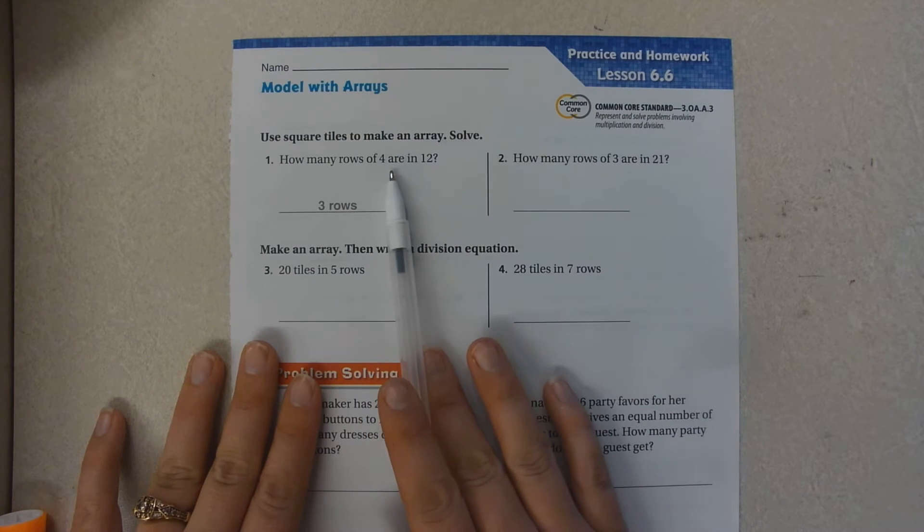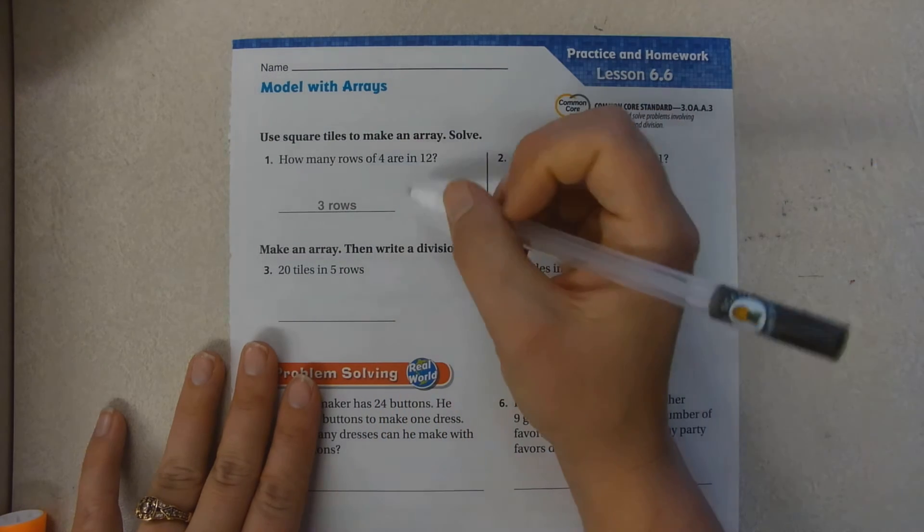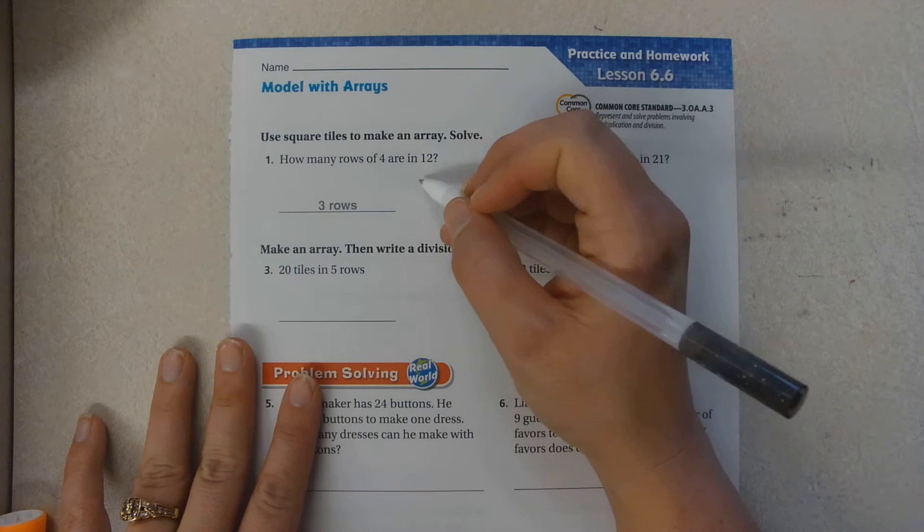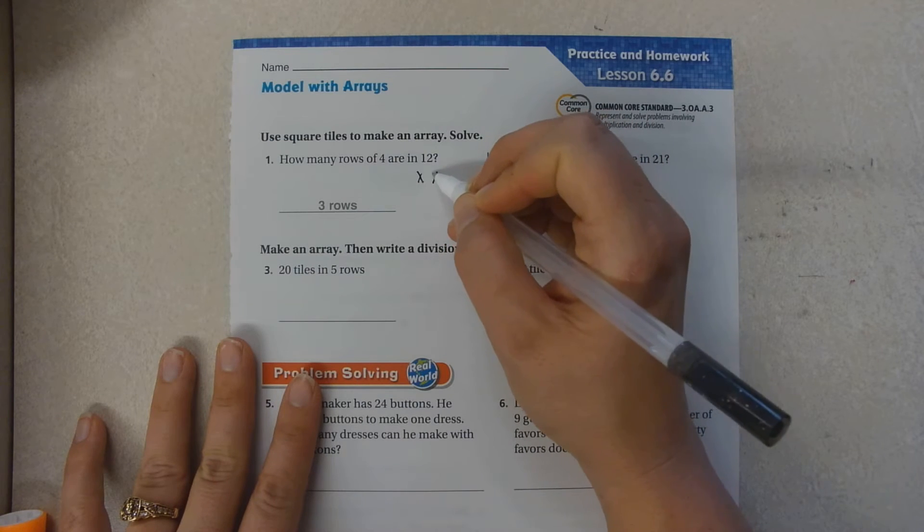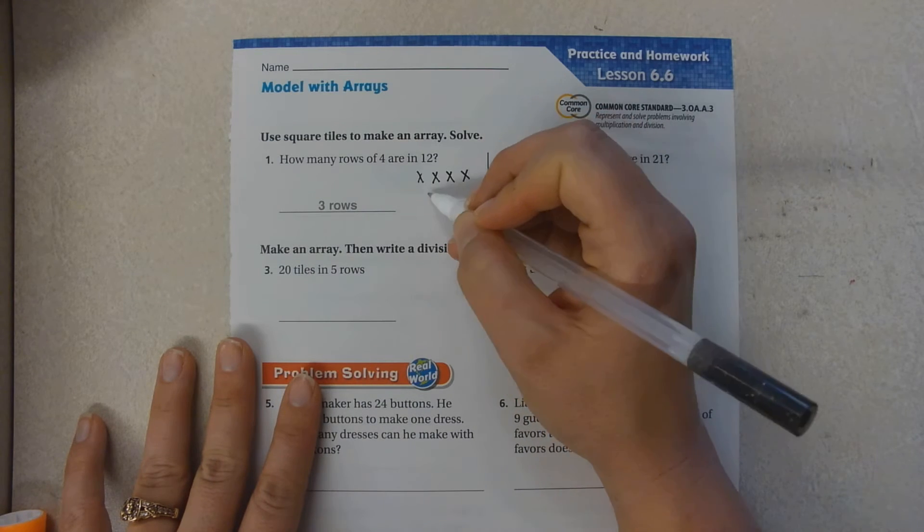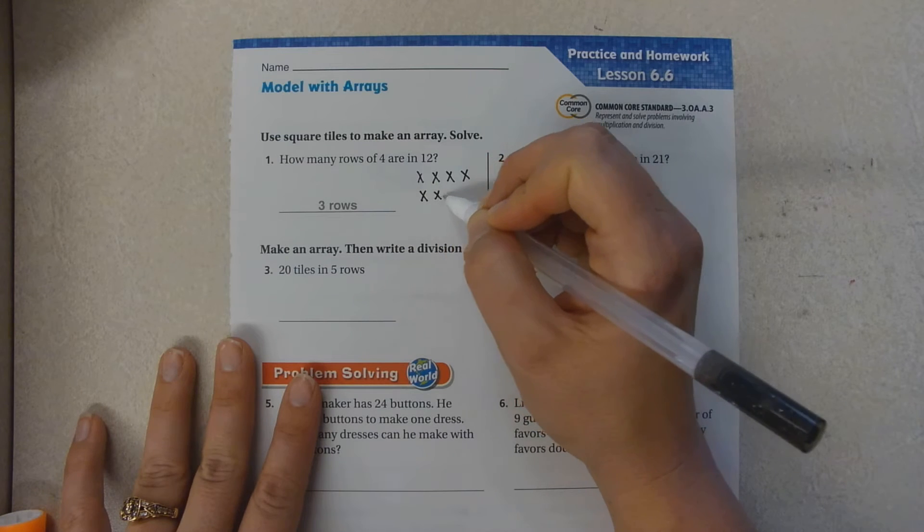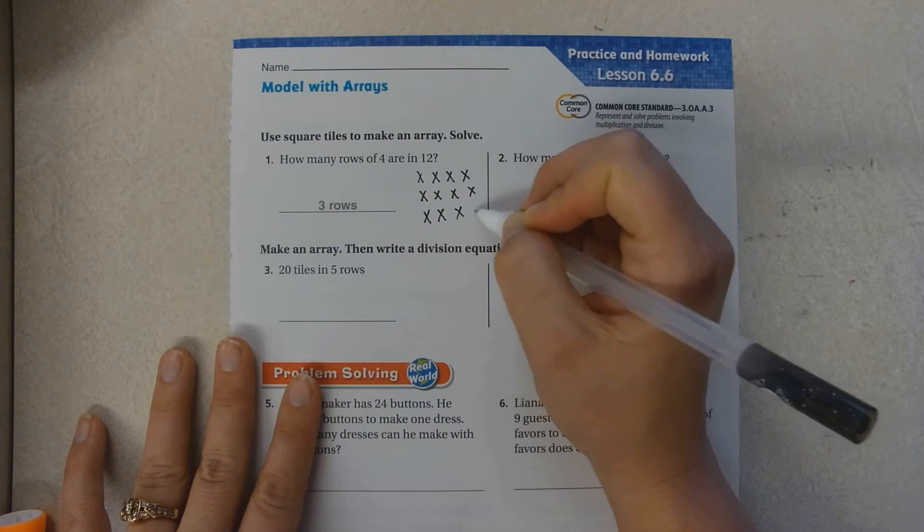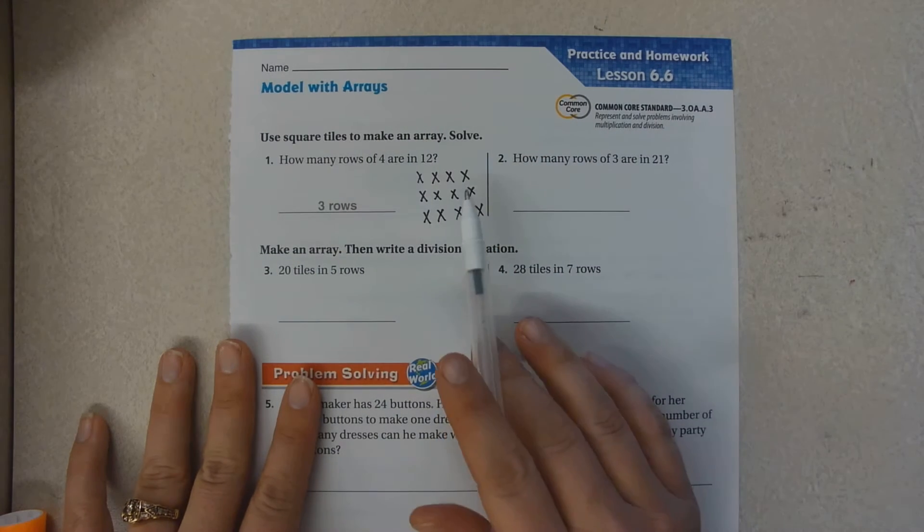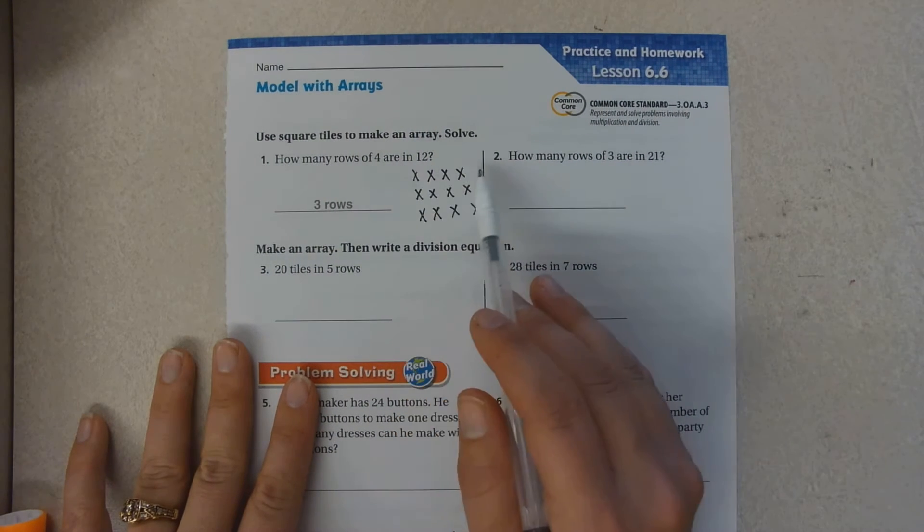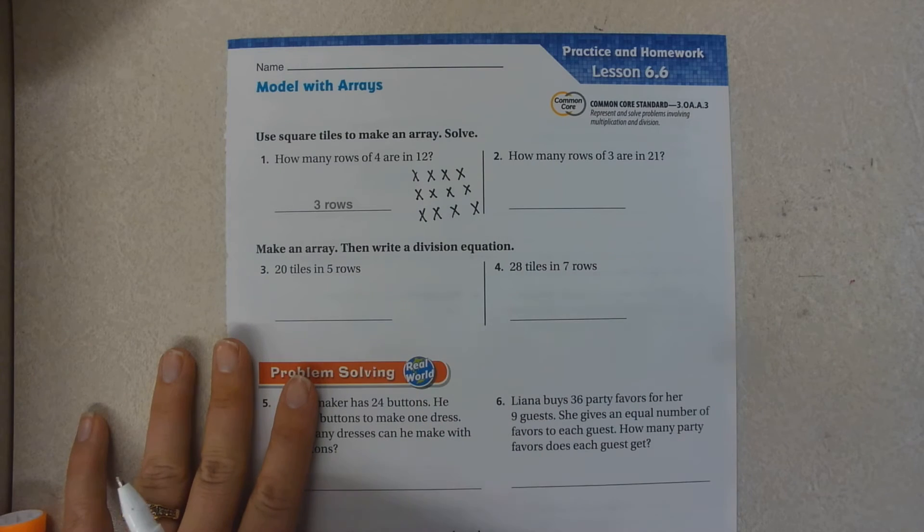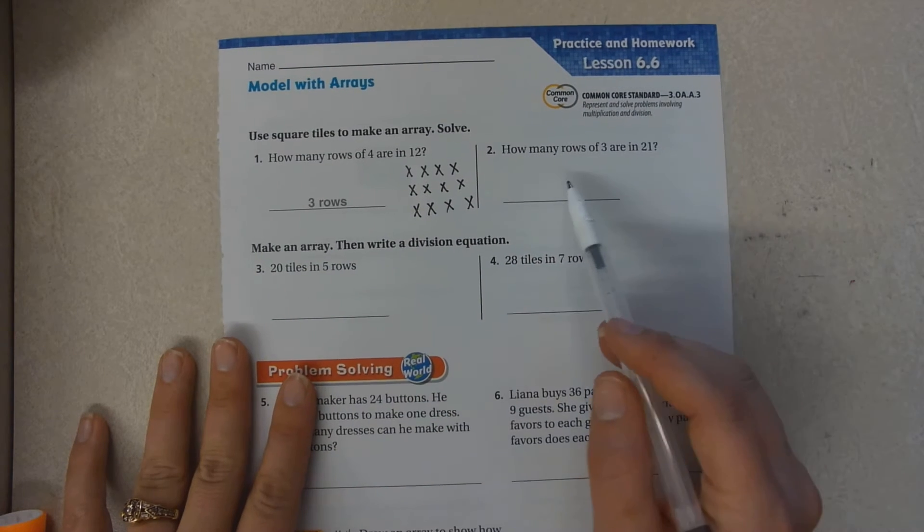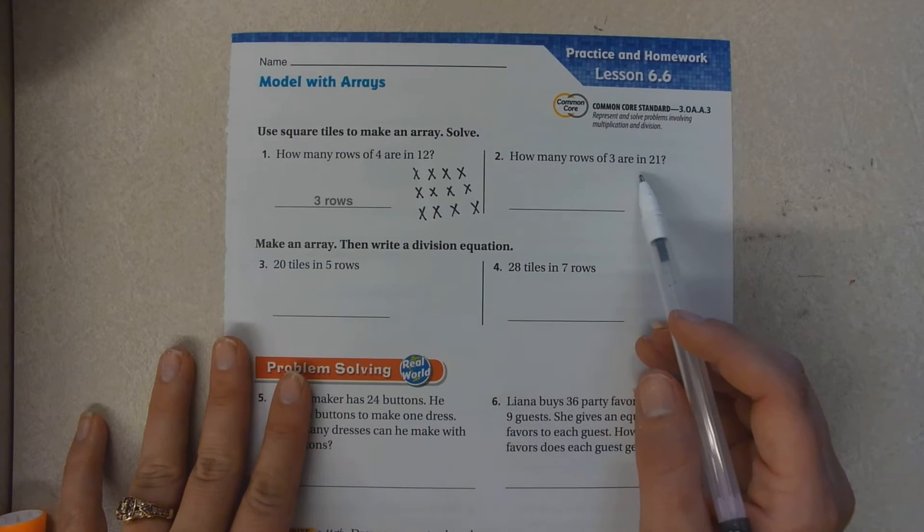For my dividend of 12, I'm going to do groups of four. One, two, three, four, five, six, seven, eight, nine, ten, eleven, twelve. So now I have four by three. How many rows of three are in 21?